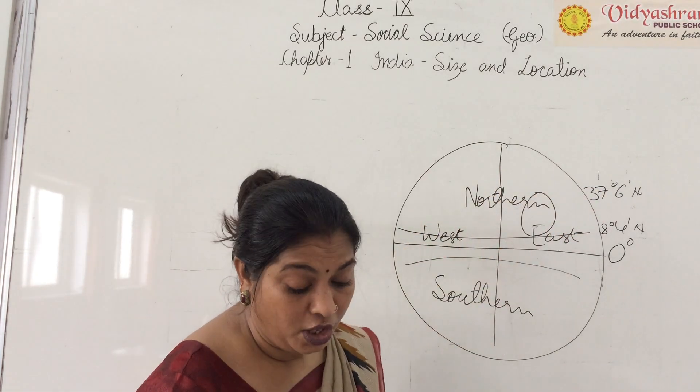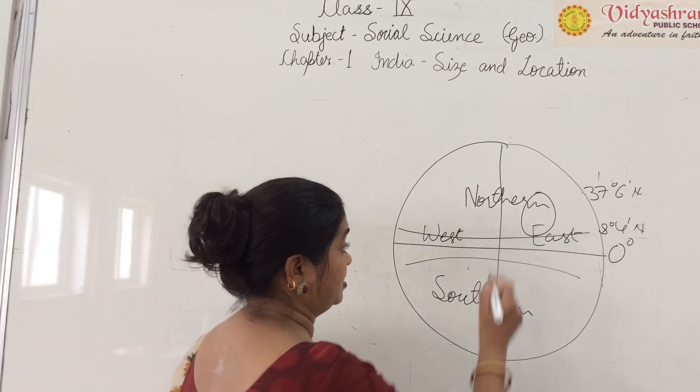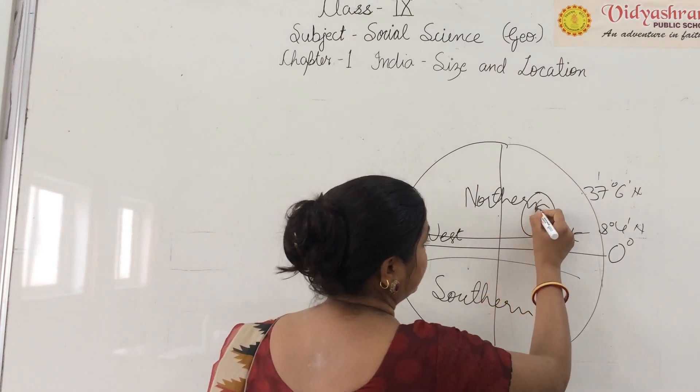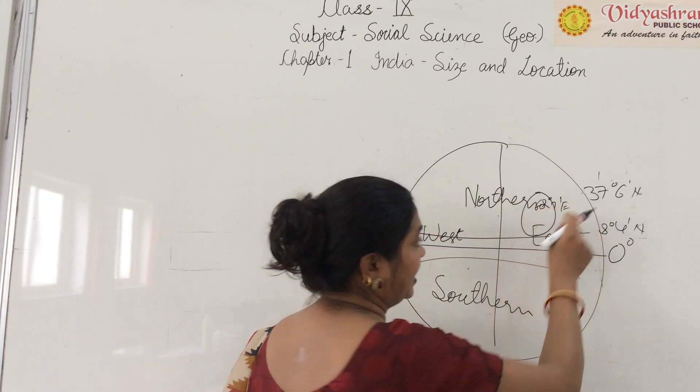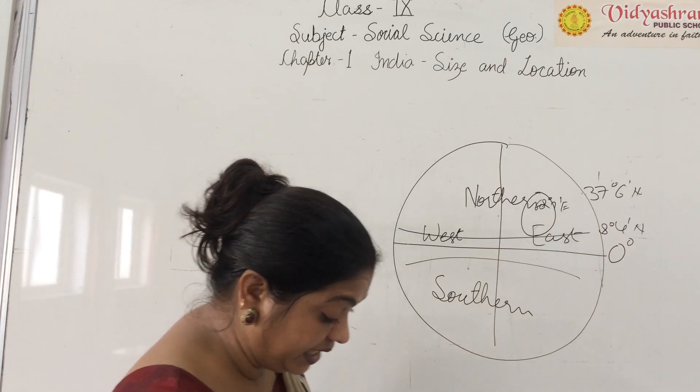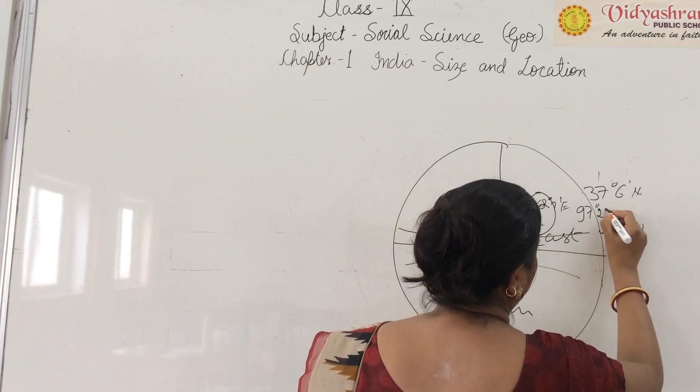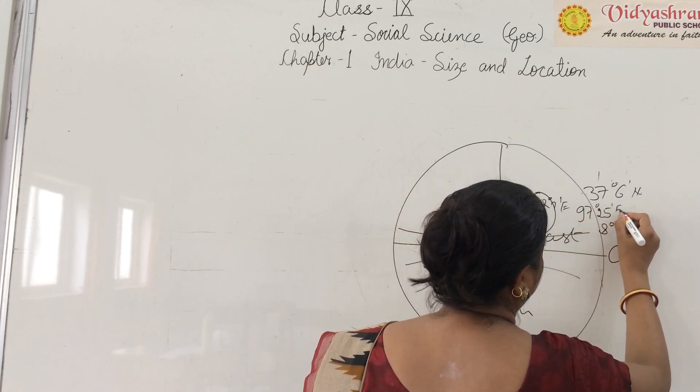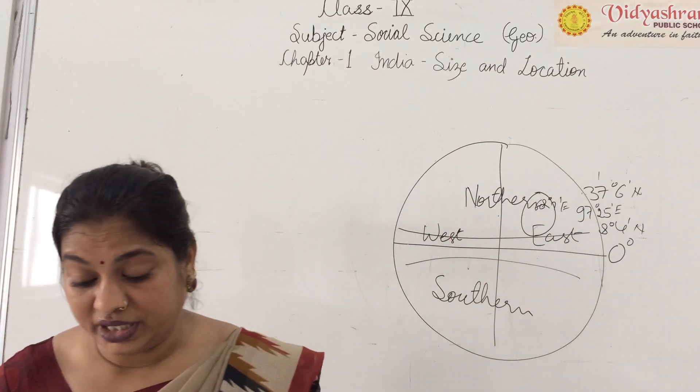Now we can see the longitude extent. Longitude extent is 68 degrees 7 minutes east. This is 0, then 68 degrees 7 minutes east. This is where we start. And we complete at 97 degrees 25 minutes east. So this is our longitudinal and latitudinal extent.